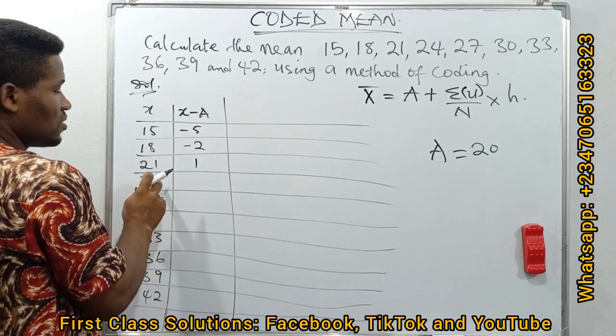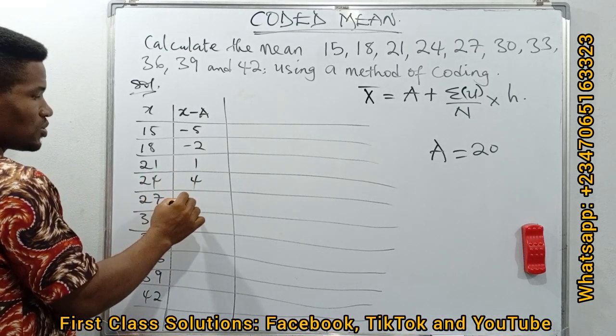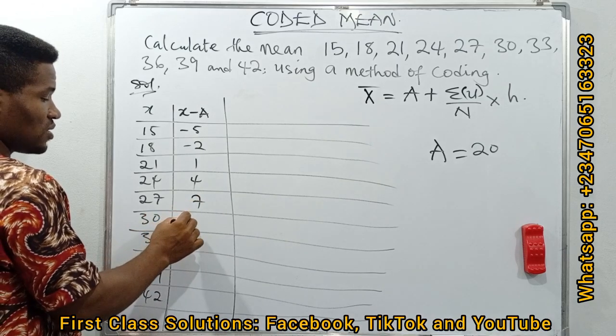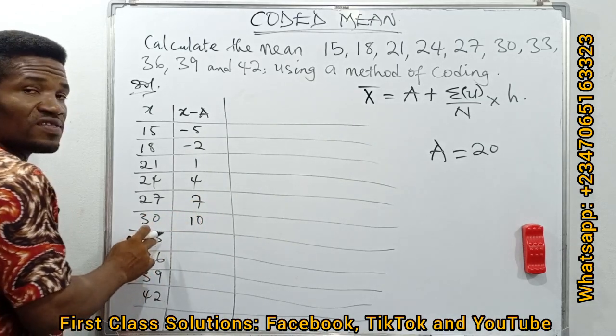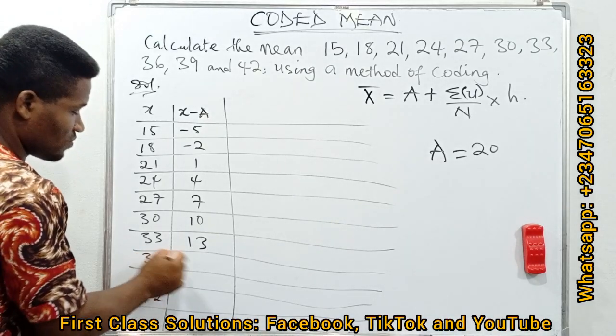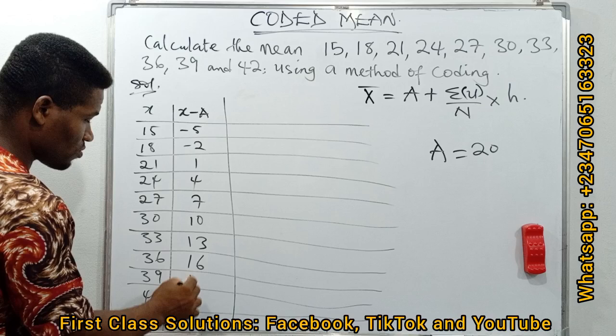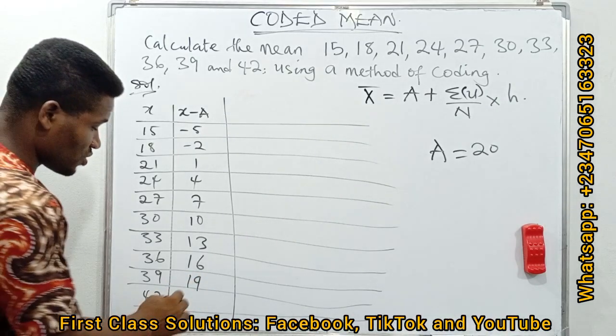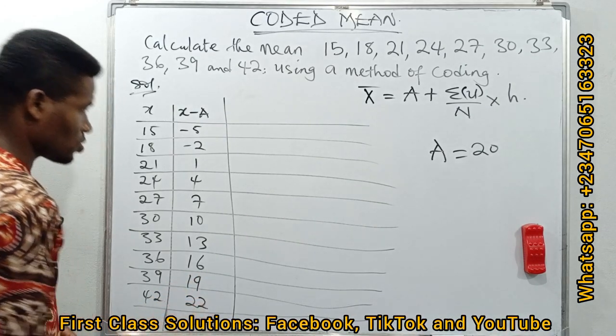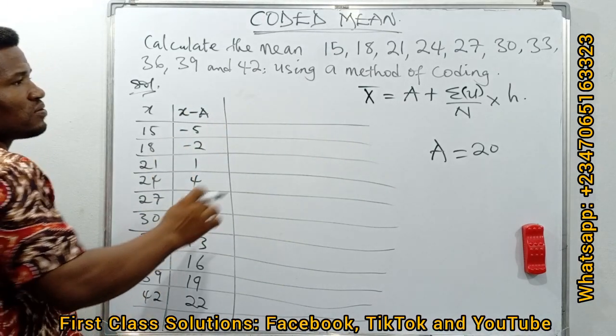24 minus 20, we have 4. 27 minus 20, we have 7. 30 minus 20, we have 10. 33 minus 20, we have 13. 36 minus 20, we have 16. 39 minus 20, we have 19. 42 minus 20, we have 22. This is our deviation from our mean.